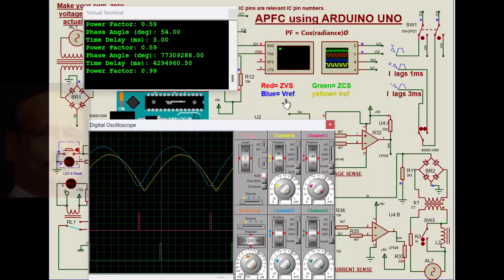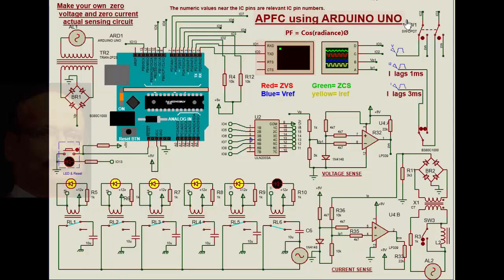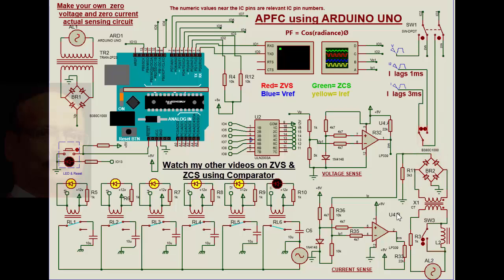Now we will go over to the arrangement of the actual zero voltage and zero current sense. We stop this and change the switch to the actual circuit side. The zero voltage sense — ZVS — will be coming from here, and the zero current sense — ZCS — will also be coming from here. In the process, the actual circuit comes into picture: zero voltage sense and zero current sense, with the current lagging behind based on the switch position.